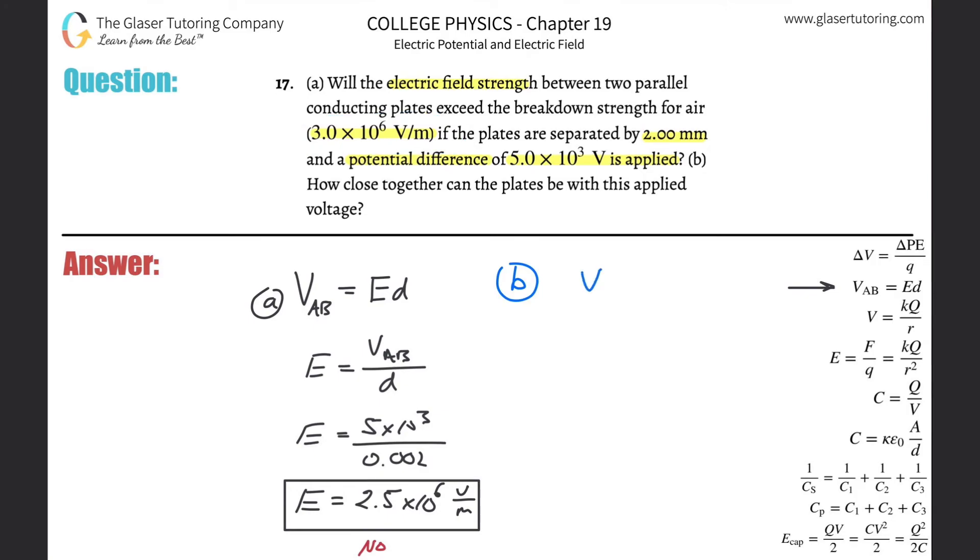So again, we start with the same formula. The voltage between the two points is going to be equal to the electric field strength multiplied by the distance between the plates. And I know it says how close together, so I got to solve that for D. So D is simply going to be equal to V over E, and then just plug it in.